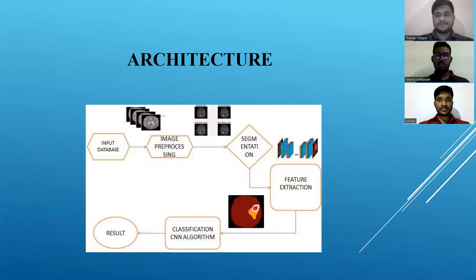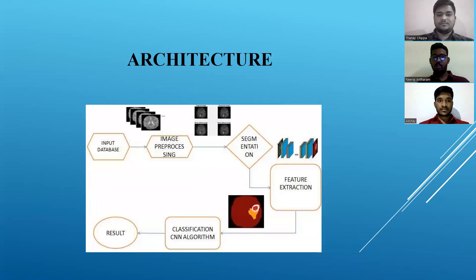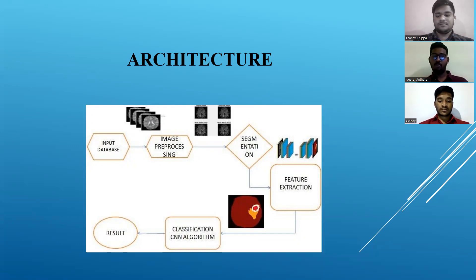This is the architecture of our project. It consists of: input database, image processing, segmentation, feature extraction, classification using CNN algorithm, and final result. In the input database, we provide the input dataset and input images. In image processing, noisy data is removed. In image segmentation, the image is segmented into multiple parts. In feature extraction, unnecessary noisy data is removed and raw data is converted into numeric form. By applying testing and CNN classification, the output is predicted.